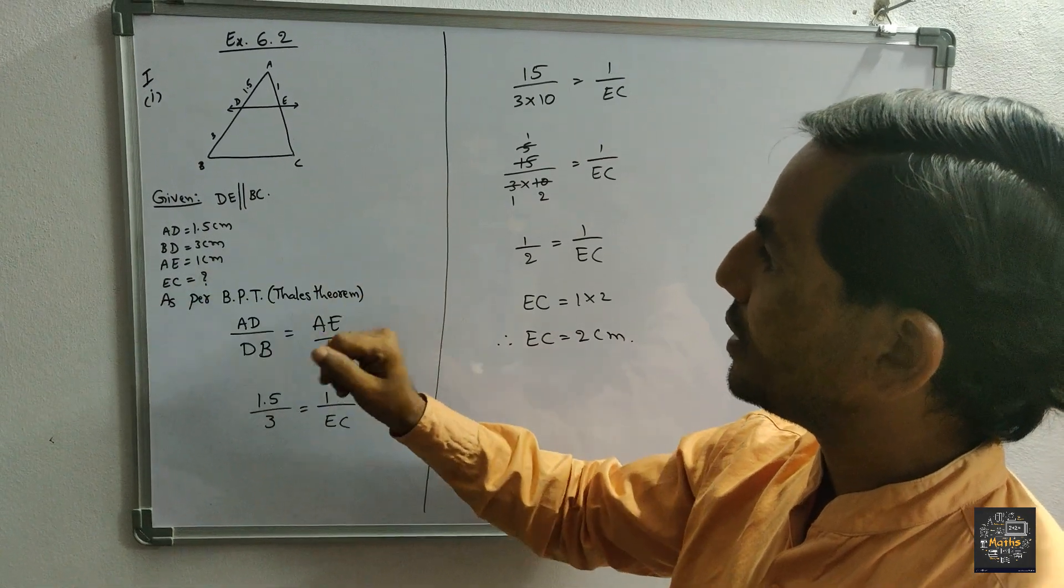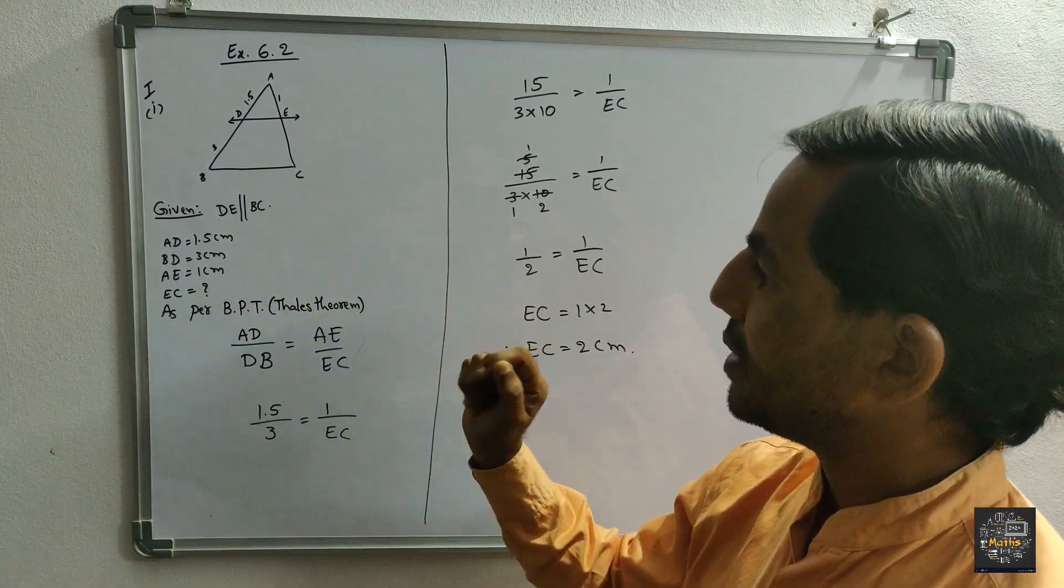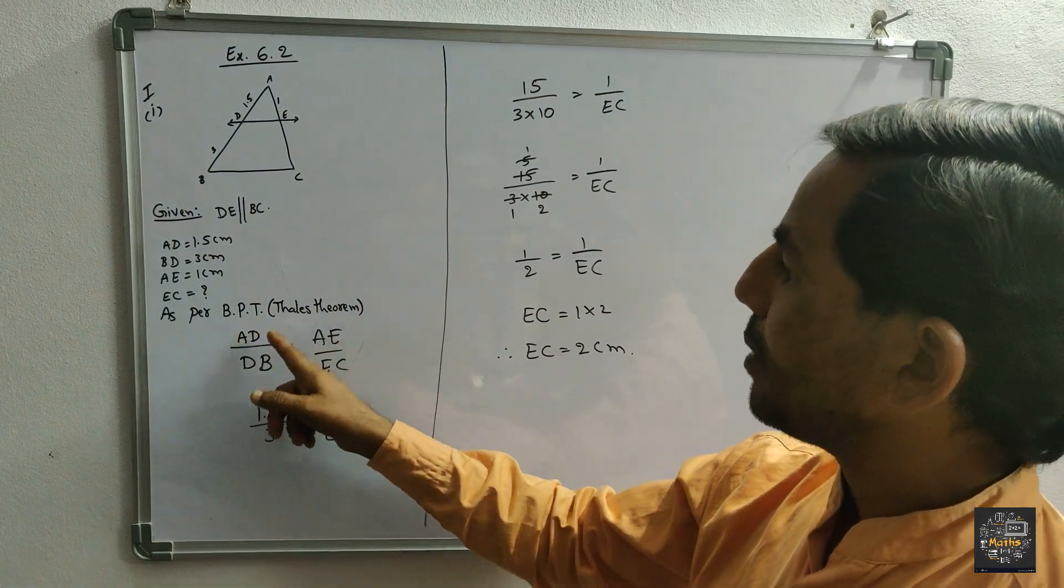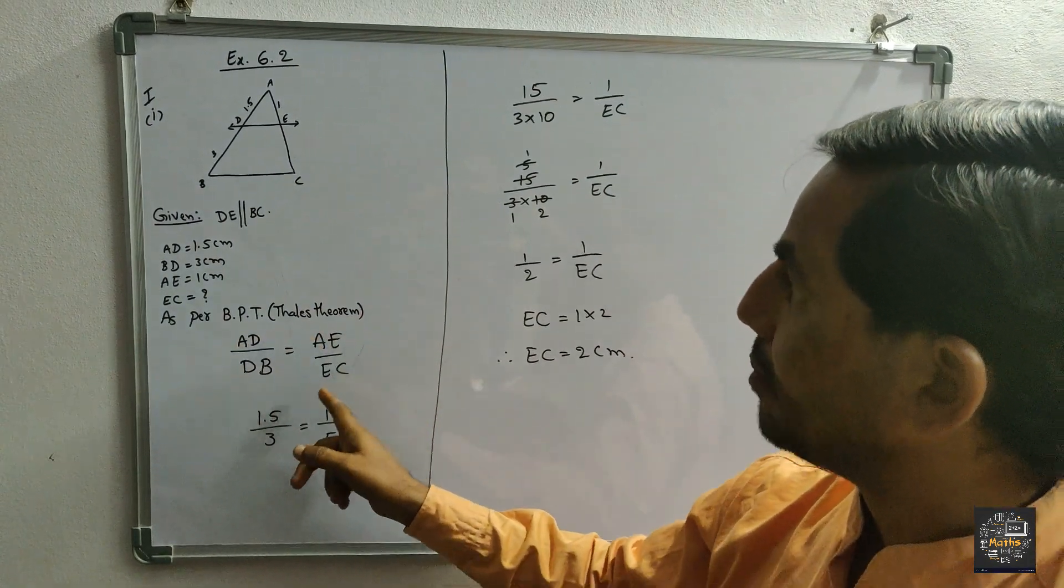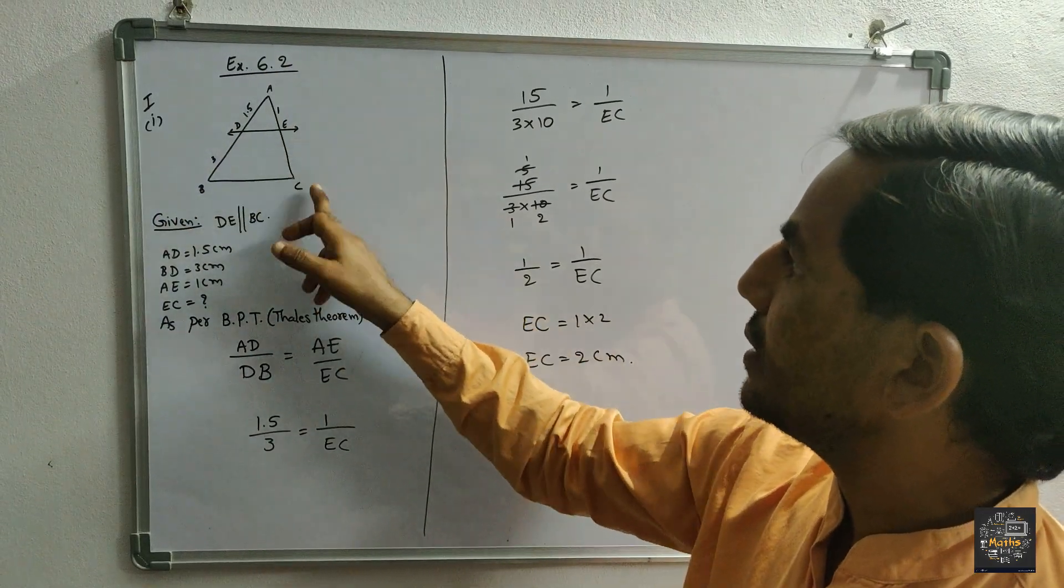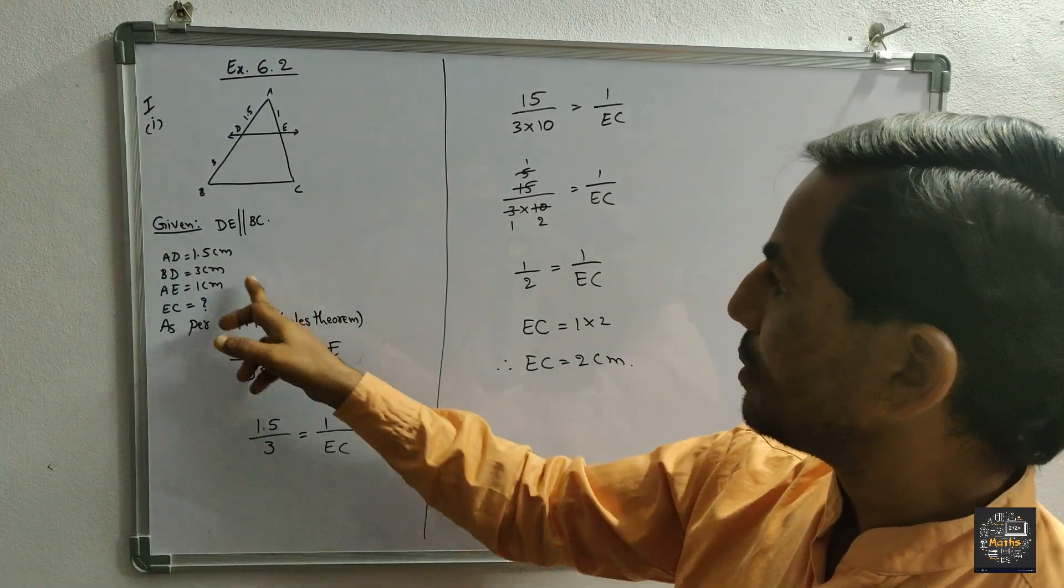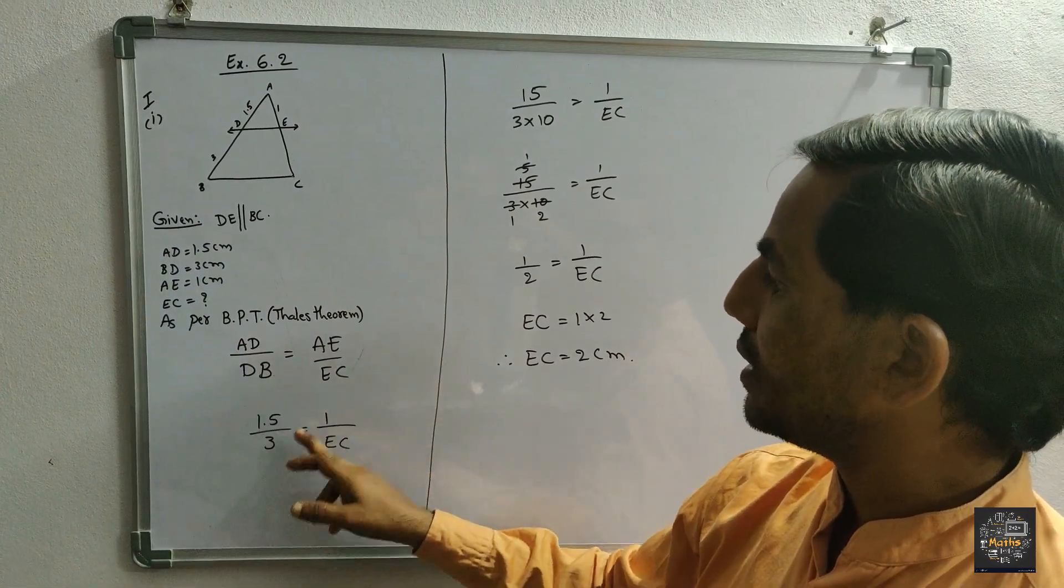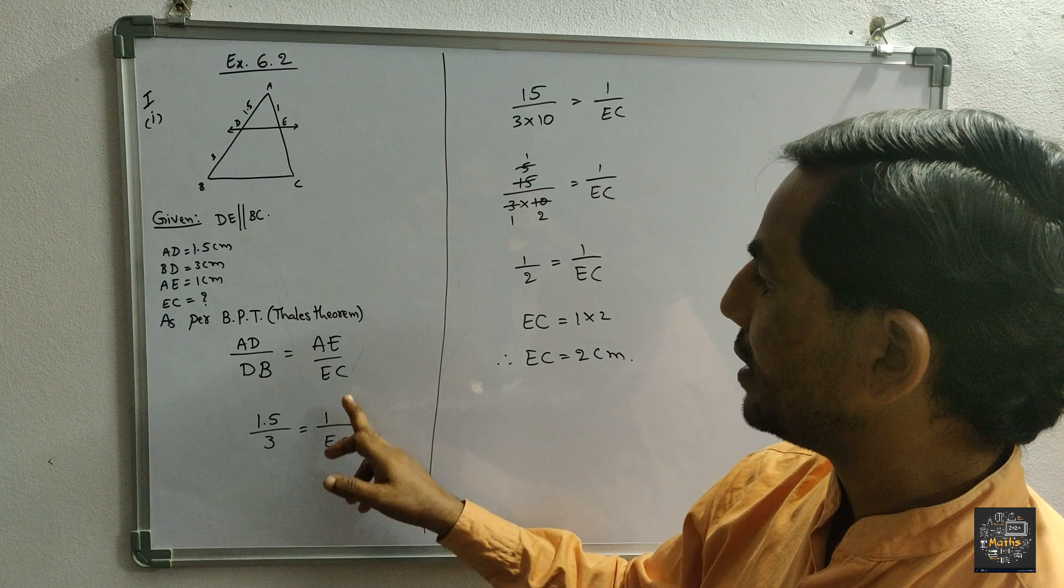BD is equal to 3 cm, AE equal to 1 cm. We need to find the EC value. As per basic proportionality theorem or Thales theorem, AD by DB is equal to AE by EC. So we substitute the values: AD value 1.5 cm, DB is equal to 3 cm, AE is equal to 1 cm, and EC value is not there.